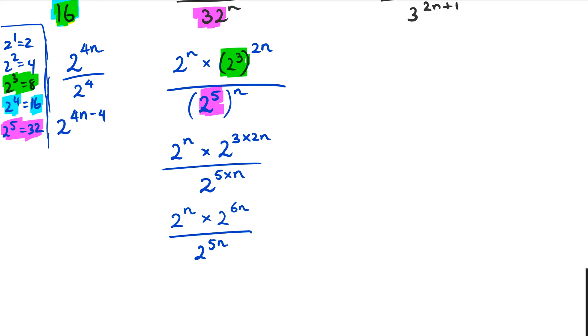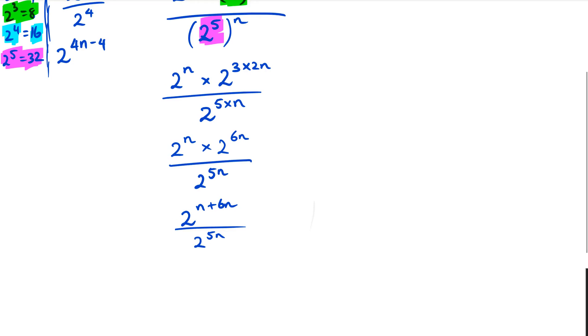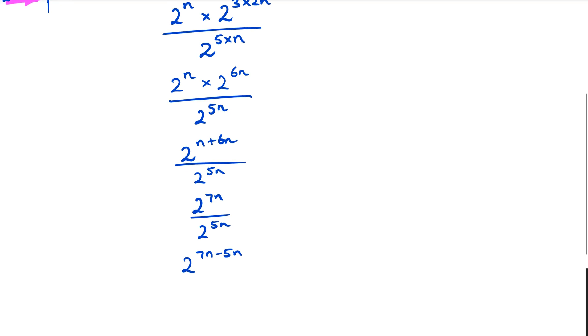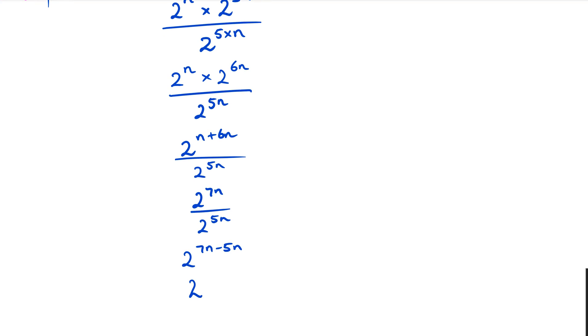So we follow the normal index rules, where we've got two bases that are the same. And if you have the two powers, you add them up. So you're going to get 2n plus 6n divided by 2, 5n. So when we do n plus 6n, we get 2 to the power of 7n divided by 2 to the power of 5n. And then now we subtract the powers. So we're going to get 2 to the power of 7n minus 5n, which simplifies to 2 to the power of 2n.